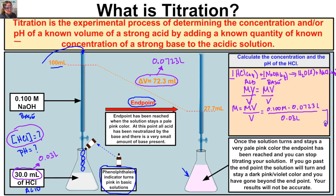Putting these numbers into the calculator, the concentration of our HCl comes out to be 0.241 moles per liter. Now for the second part: we know the molarity of our acid is 0.241 mol/L. Since HCl is a strong acid, it dissociates completely. To get the pH we simply take the negative log of our H⁺ concentration.